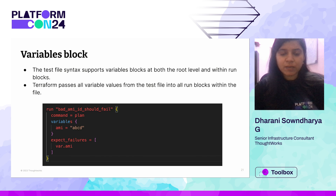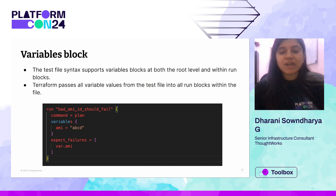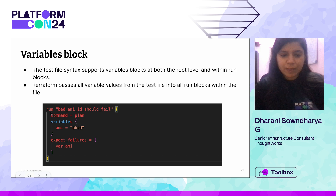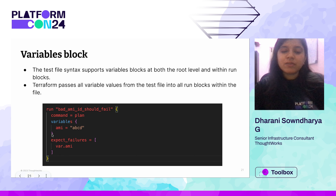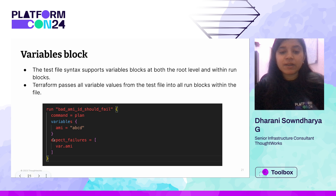Before the demo, I want to quickly cover some semantics of terraform testing. You can specify a variables block inside a run block. A run block is similar to a test case — it follows the format: run followed by a meaningful name, and inside you can specify a variables block. This is useful when you have dependencies, for example, if you want to test that your code fails as expected using a failing variable.